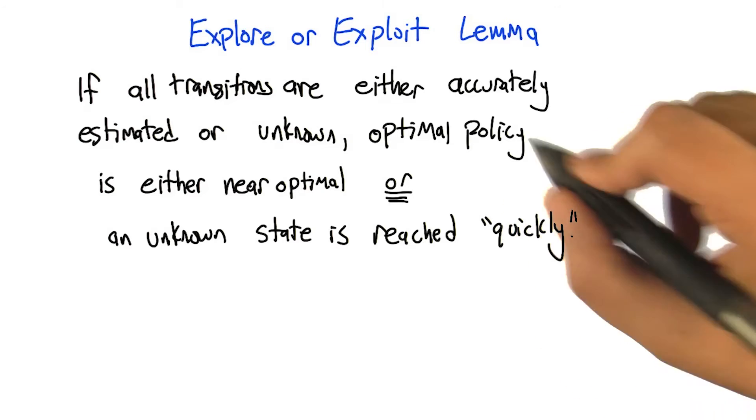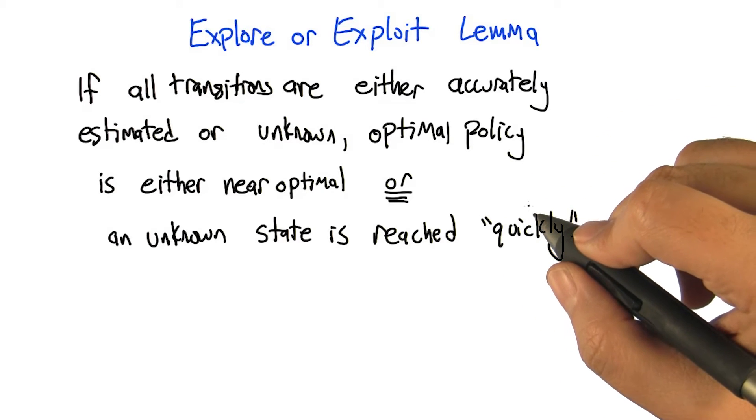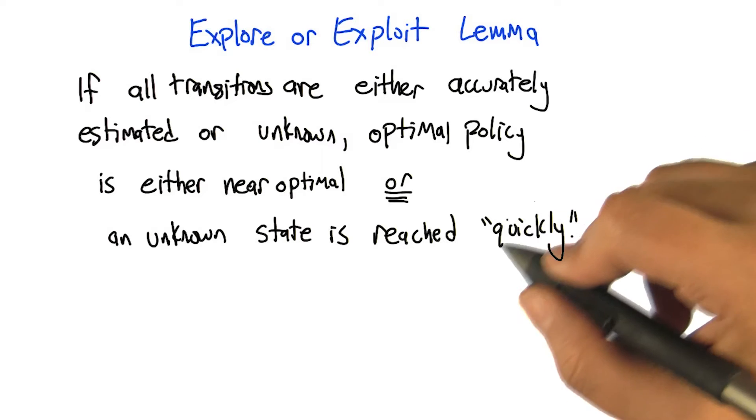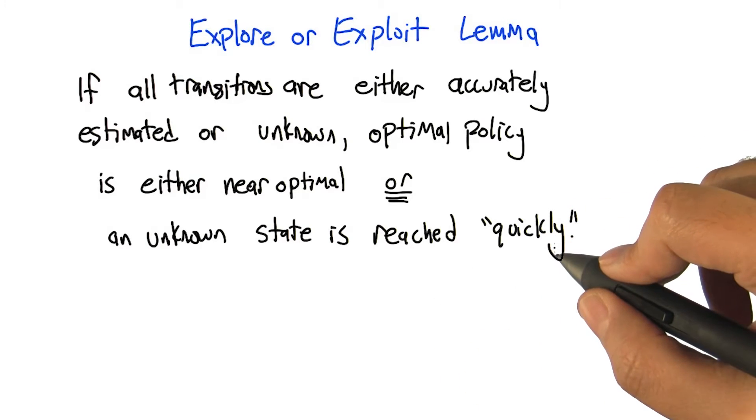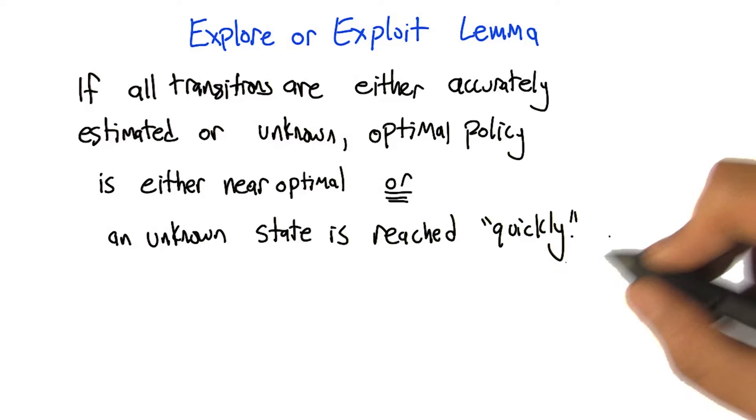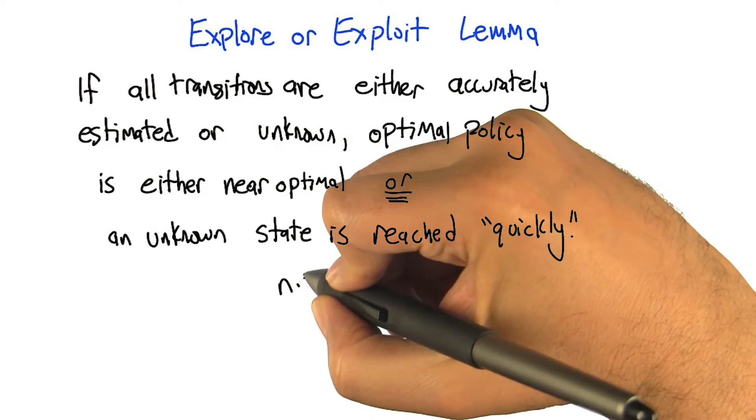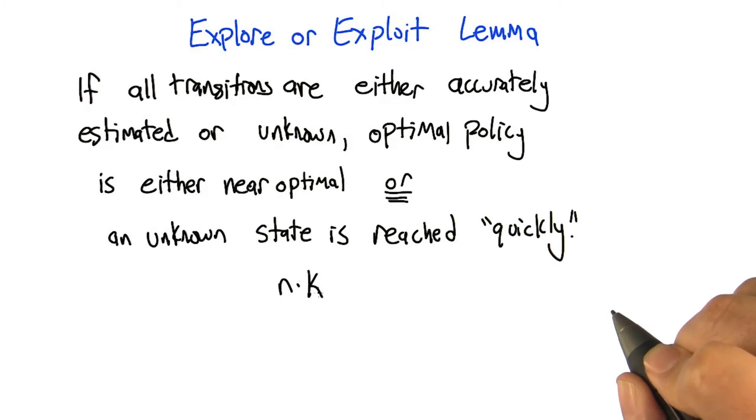Given that it hasn't failed, then this would actually be true. And if it's true, then what's going to be happening is we're either going to be doing the right thing or we're going to quickly bump into a new state and learn something new and continue. And the number of times that we can learn something new is going to be bounded by the number of states times the number of actions.